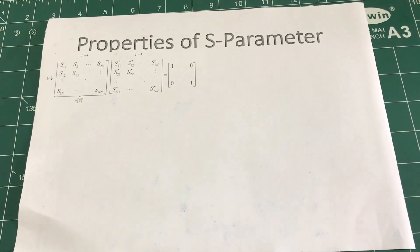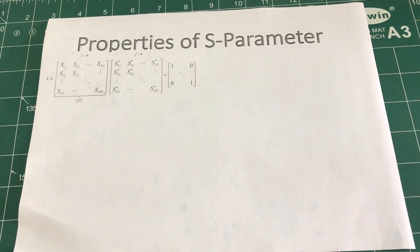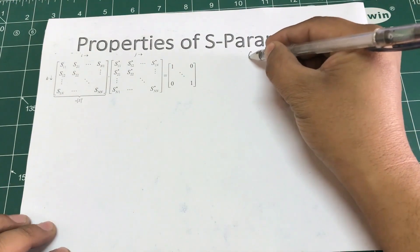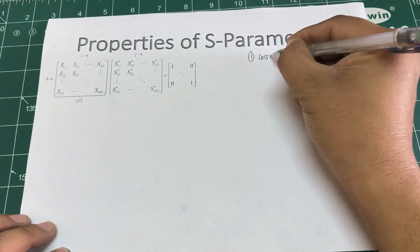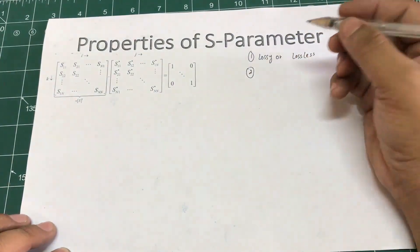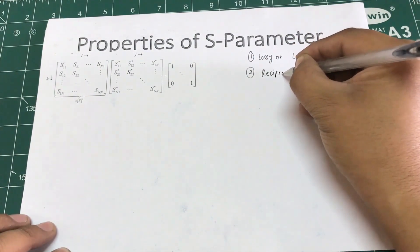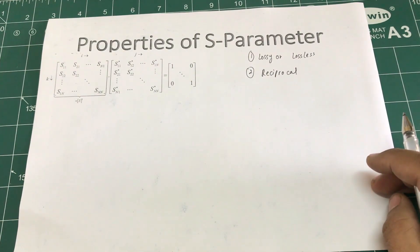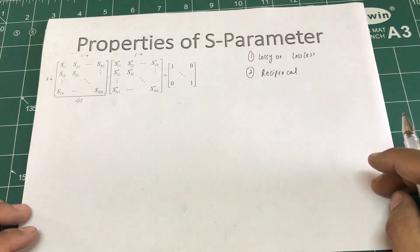In this tutorial we will talk about the properties of S-parameters. The last two videos were introductions to microwave devices and S-parameters. When looking at a network, there are two properties associated with S-parameters: first, is my network lossy or lossless? Second, is my network reciprocal? These are the two important things when observing S-parameters of a microwave device.